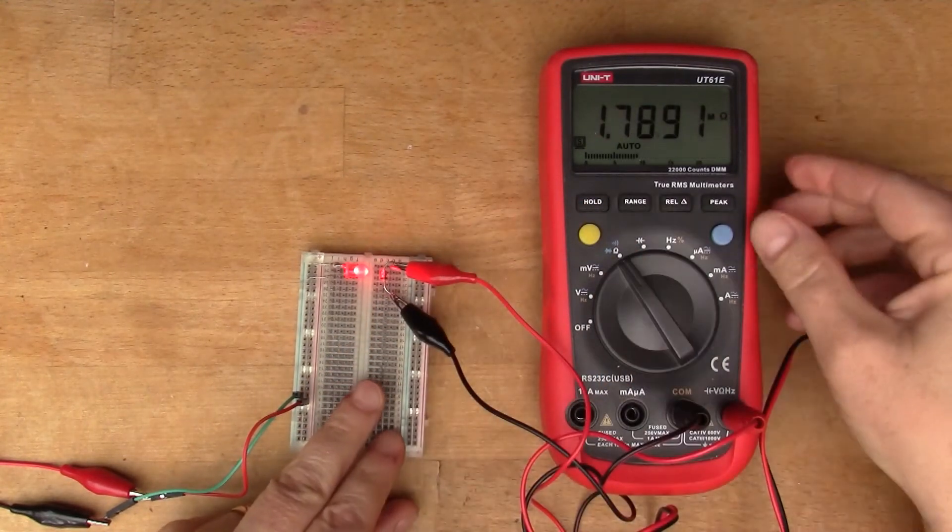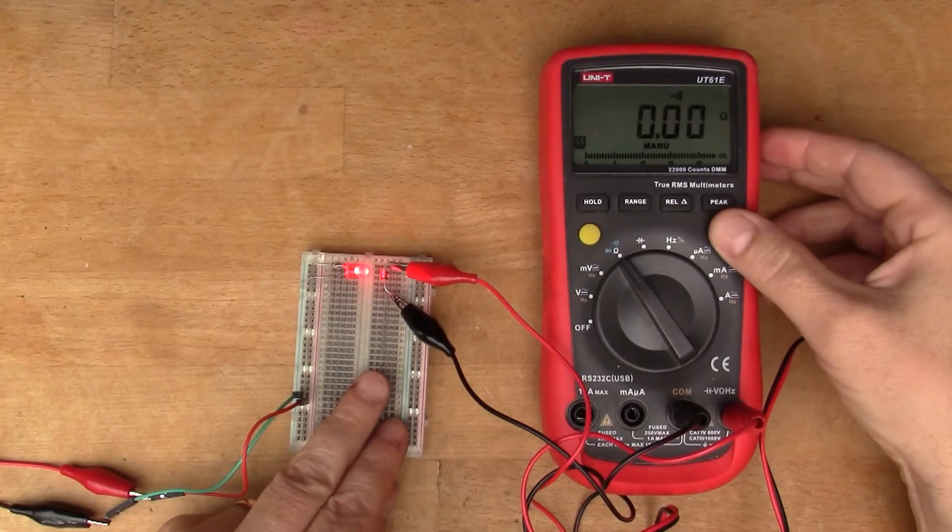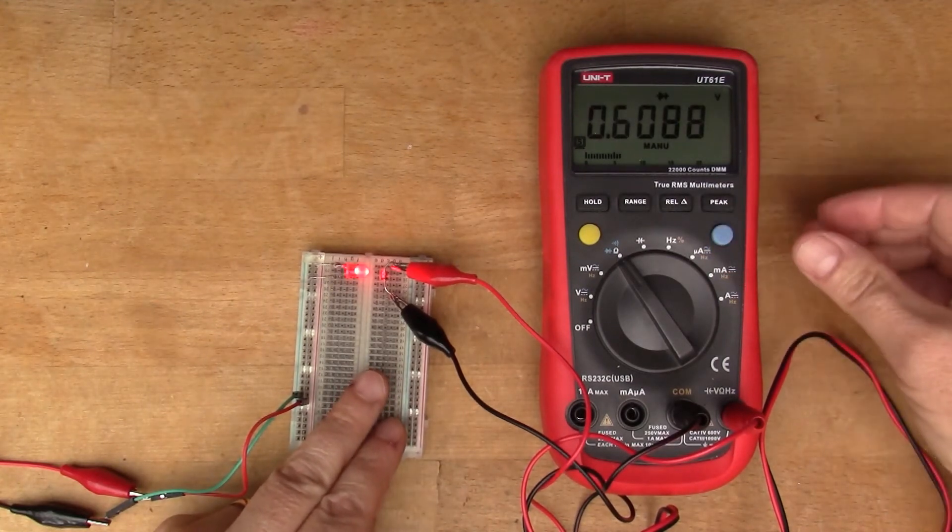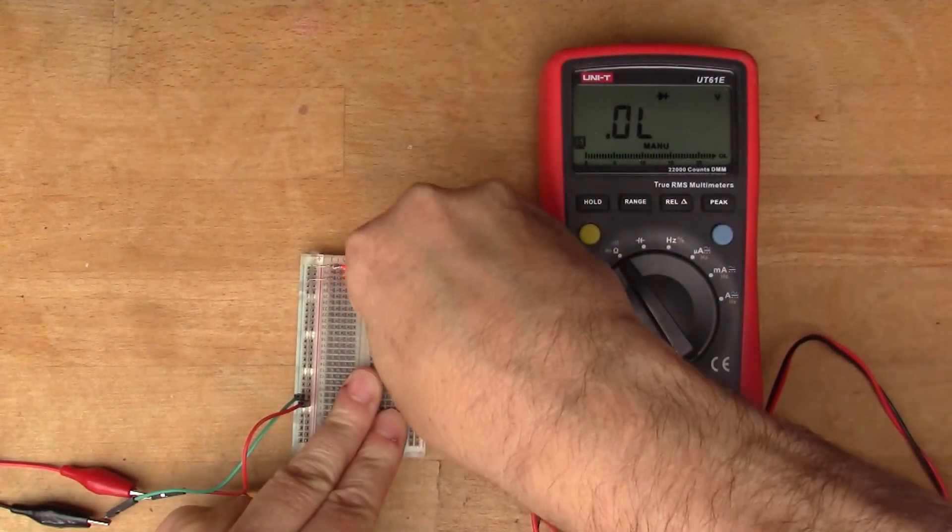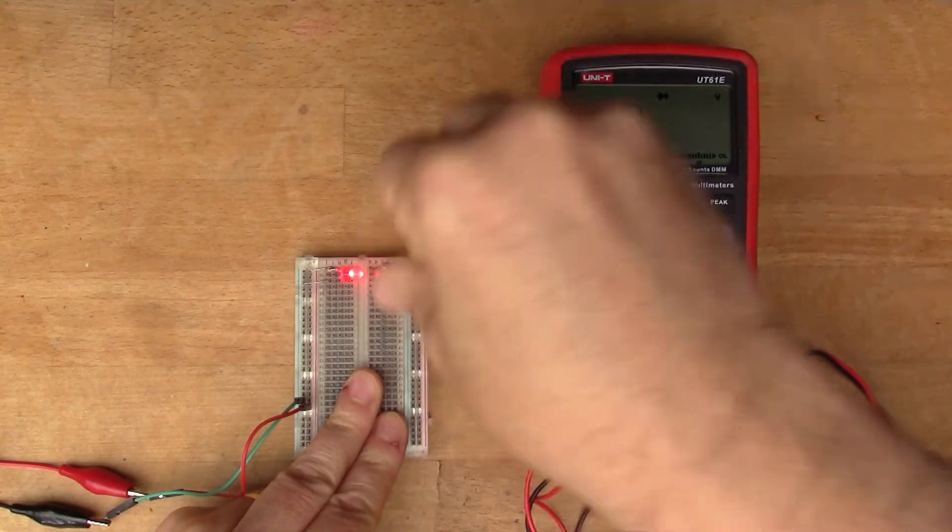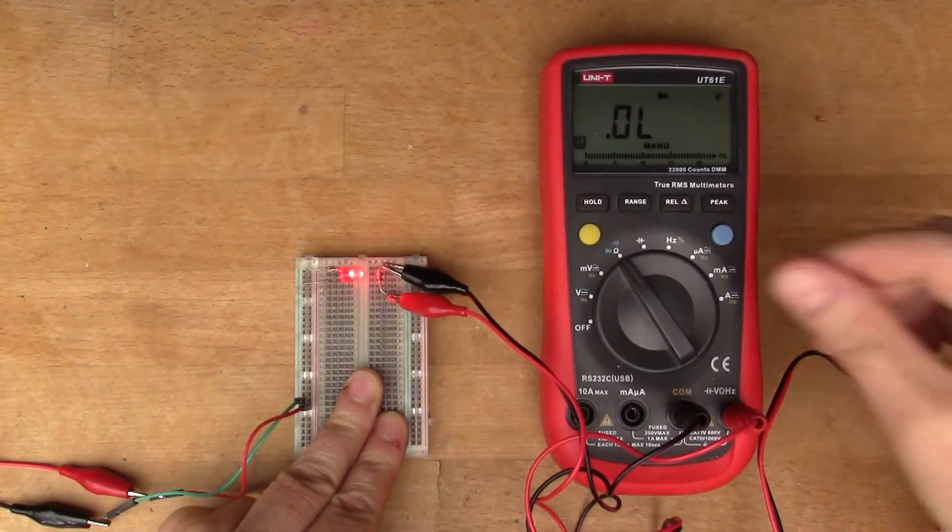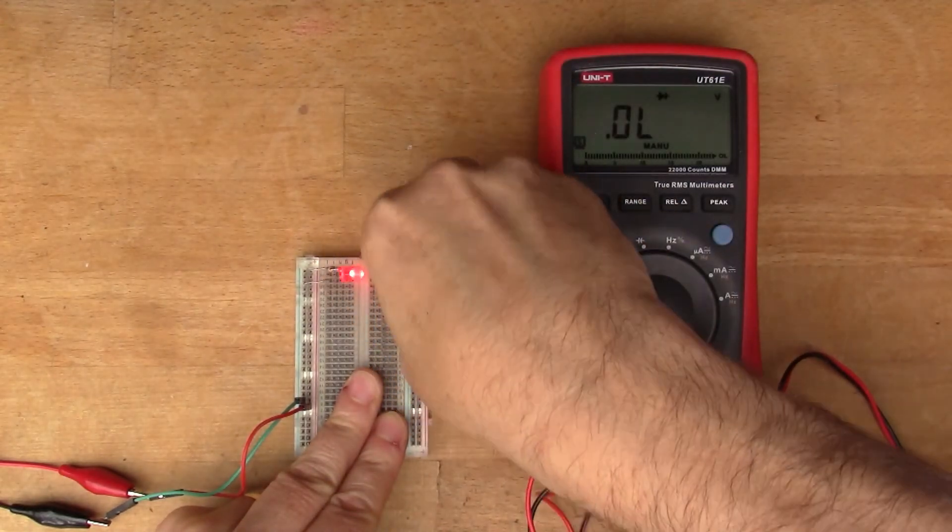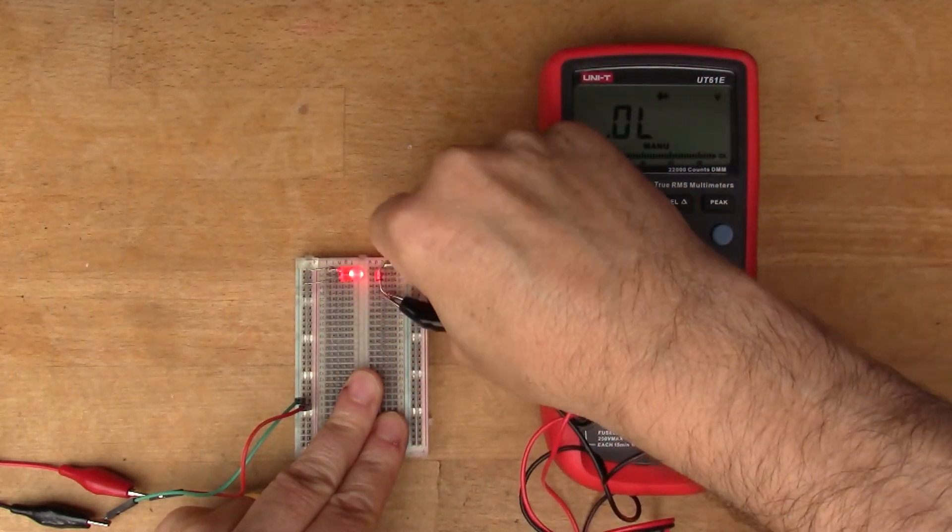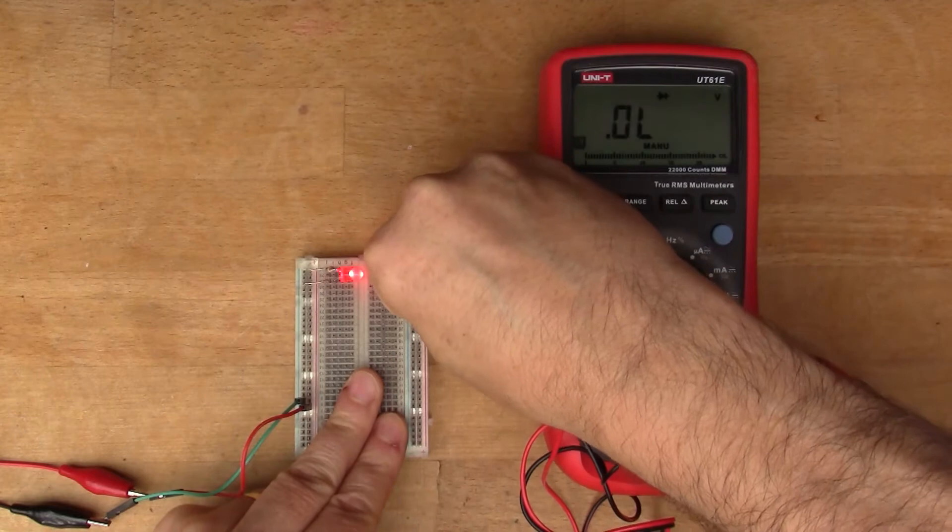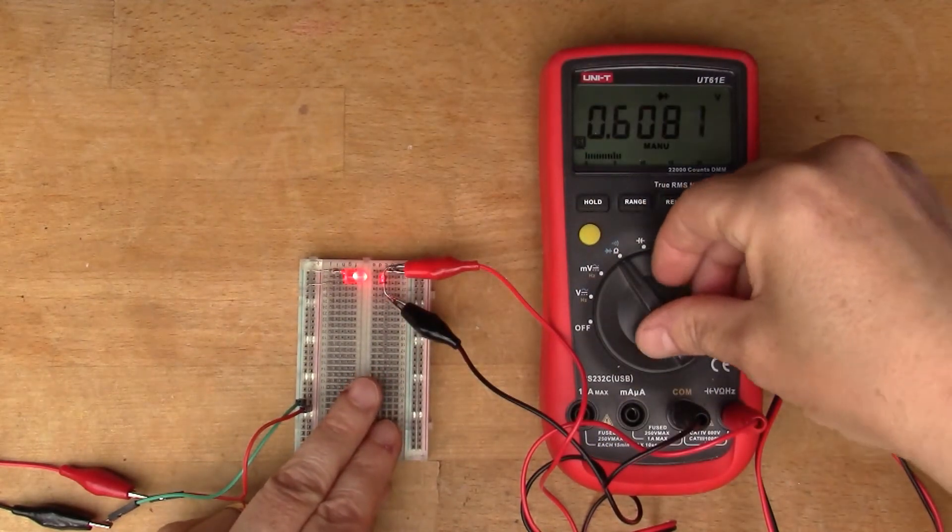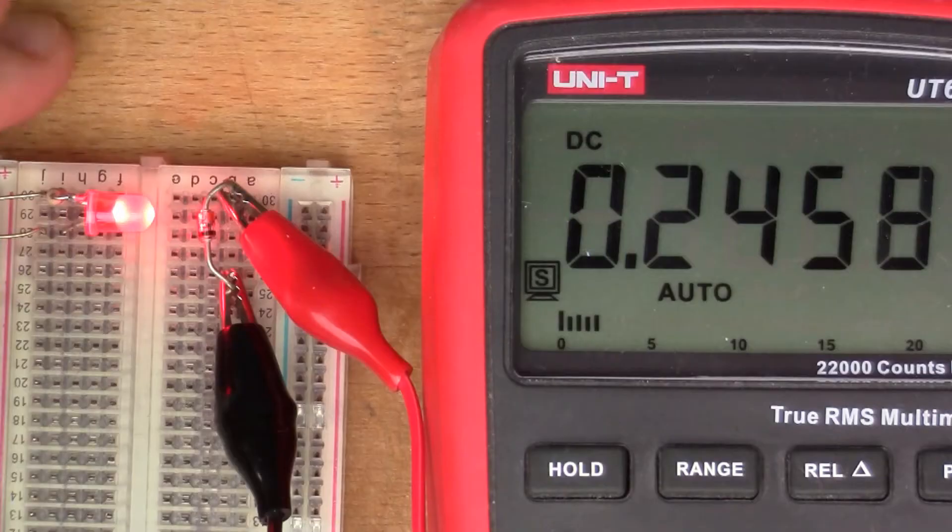So that's got 0.6 volts forward voltage and reverse voltage is zero, so it's a working diode. I'm not exactly sure what kind of diode it is - this one's been lying around in my component box for some years now.